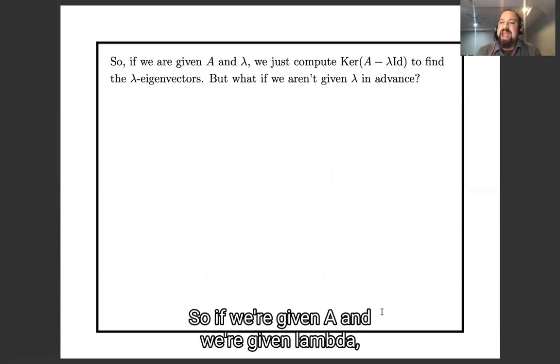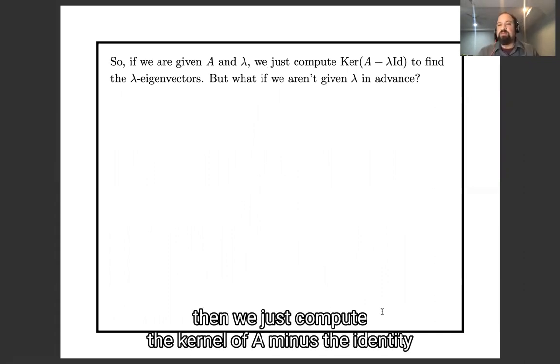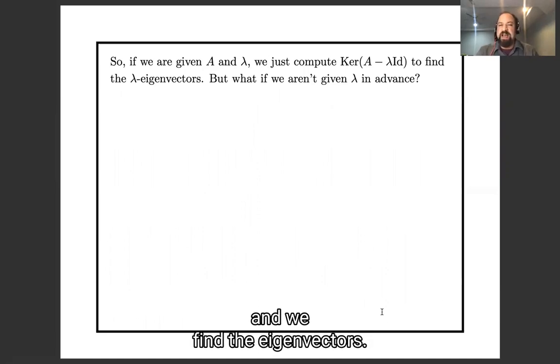So if we're given A and we're given lambda, then we just compute the kernel of A minus lambda identity and we find the eigenvectors.